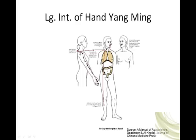It crosses back and connects, then travels across the shoulder to connect with Stomach 12 at the center of the supraclavicular fossa. Here the channel splits. A deep branch moves internally, connects with the lungs, connects with the home organ — the large intestine — and travels along the pathway of Foot Yang-ming, connecting to its phase pair as well, ending at Stomach 37, which is the lower He-sea point of the large intestine.